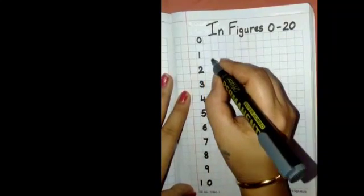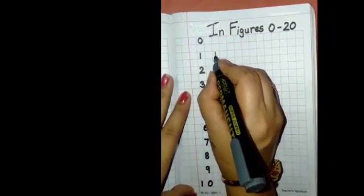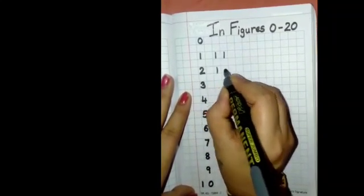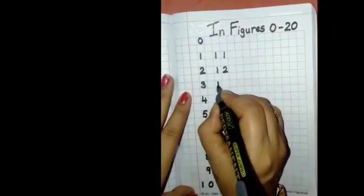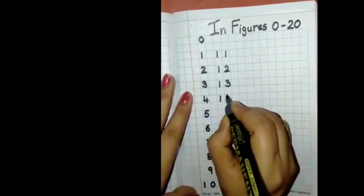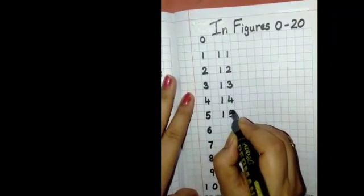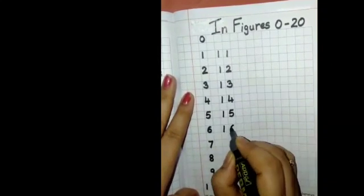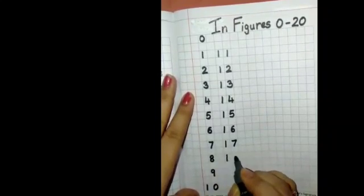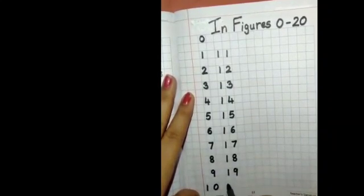Now leave one line over here and start from here. 11, 12, 13, 14, 15, 16, 17, 18, 19, 20.